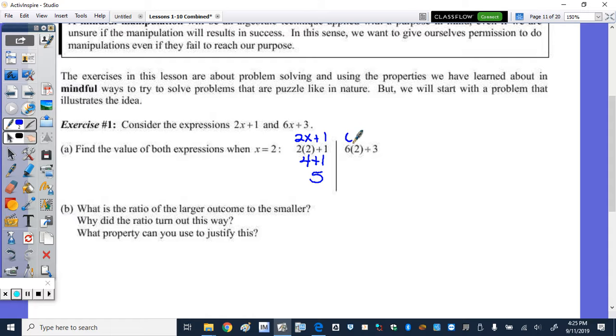We plugged in the 2 here to the expression 6x plus 3. And we get 12 plus 3, which is 15. What is the ratio of the larger outcome to the smaller? My fault. It said larger to smaller. Pay close attention to that. The larger number is 15. So it would be 15 to 5 or 15 over 5, which is 3, or 3 to 1.